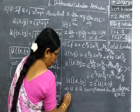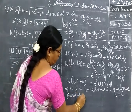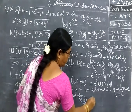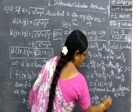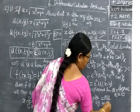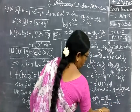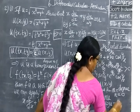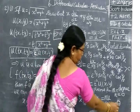Therefore we can immediately apply Euler's theorem. By Euler's theorem: x into partial u by partial x plus y into partial u by partial y equal to n into u. But n equals 0, so it equals 0 into u, which is equal to 0. This is the proof.